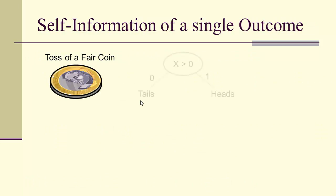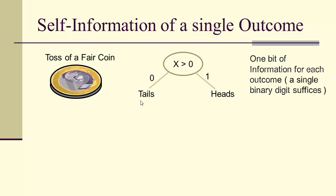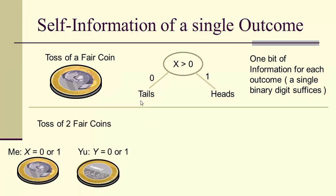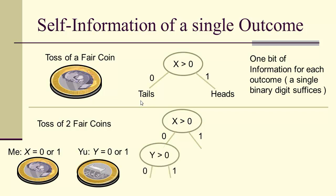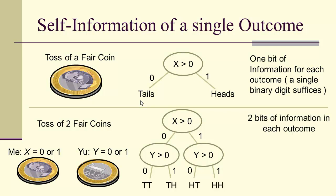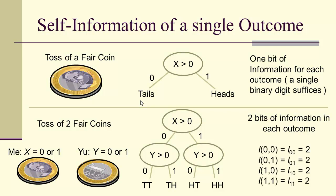For a single toss of a fair coin — heads or tails — there is one bit of information for each outcome; we only need a single binary digit. If we toss two fair coins, we can ask whether I got heads and whether Dr. U got heads, and that encodes everything. So there are two bits of information in each outcome of the simultaneous toss of two fair coins: I(0,0) = 2, and likewise for all binary string outcomes.